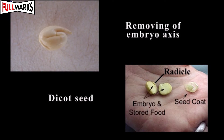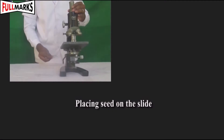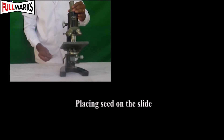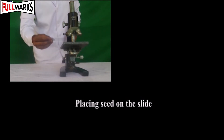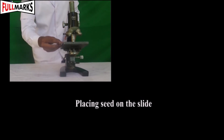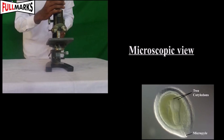Now slowly remove the embryo axis with a needle and place it on the slide. Observe these three parts of the seed. Obtain and record your observations and draw diagrams. Observation: The seed has a small pore called the micropyle.